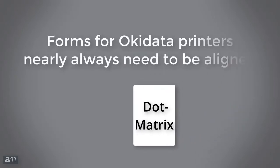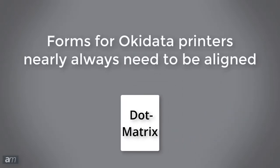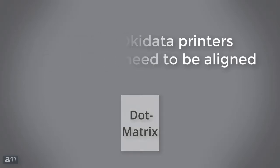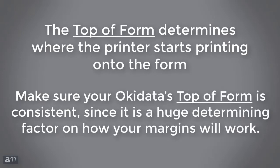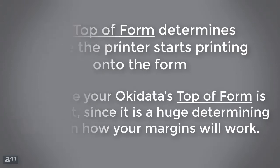Forms for Okidata printers nearly always need to be aligned so the text that is printed lines up with the corresponding fields. The top of form determines where the printer starts printing onto the form. Make sure your Okidata's top of form is consistent, since it is a huge determining factor on how your margins will work.